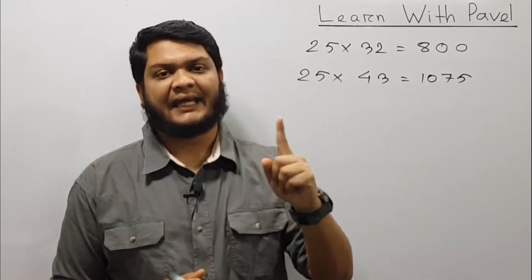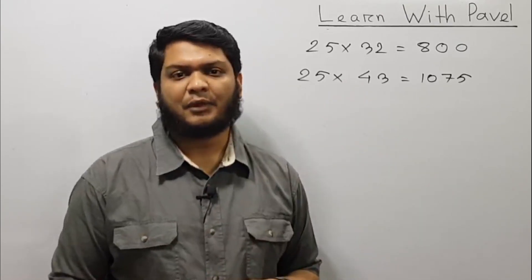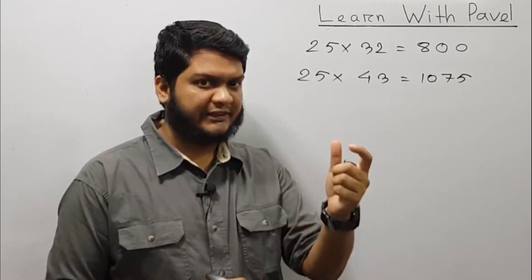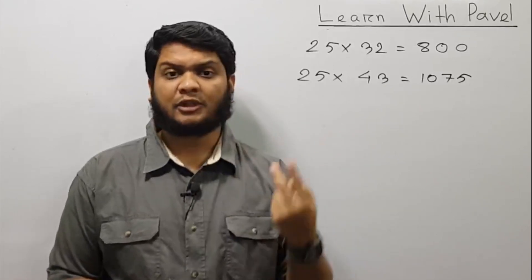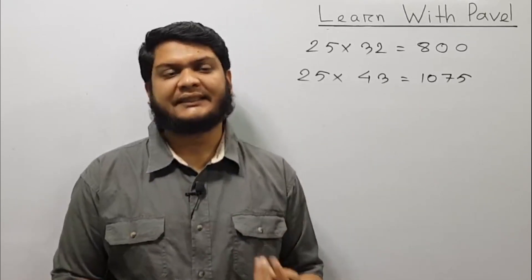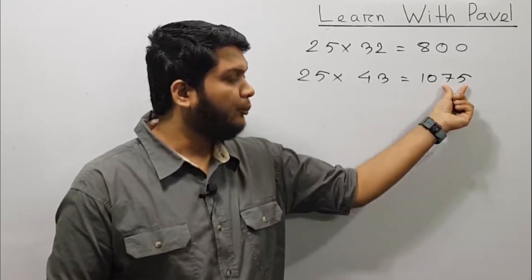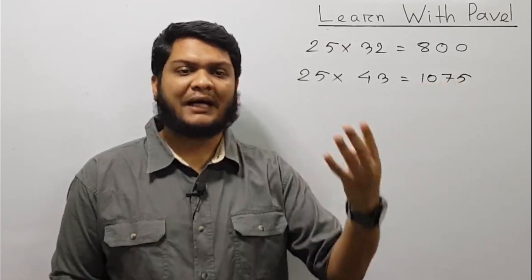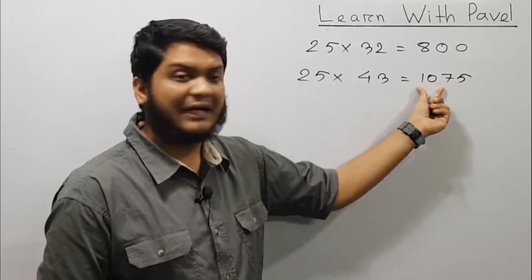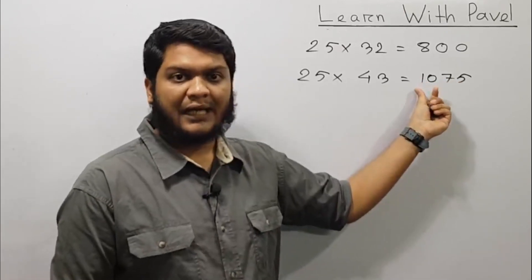If you have 1, you will be 35. If you have 2, you will be 25. If you have 4, you will be 35. And the first time you have 4, you will be able to start the whole thing.